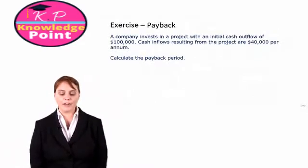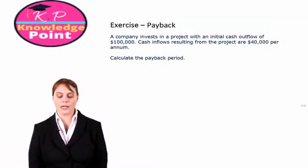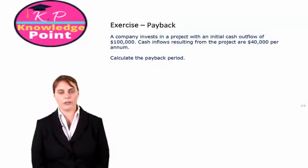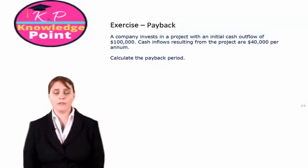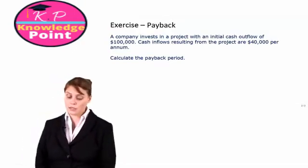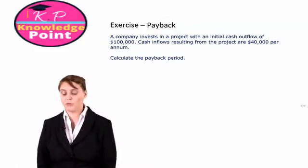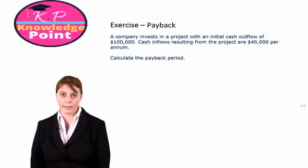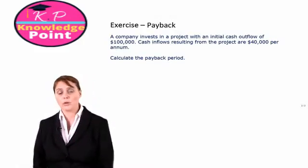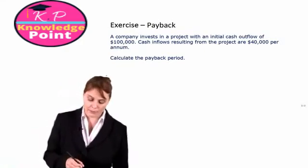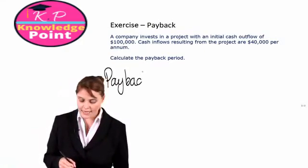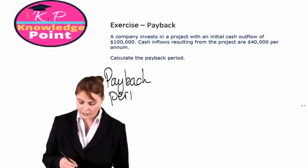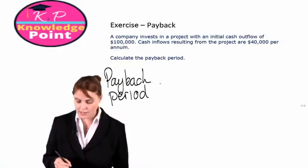We are told a company invests in a project with an initial cash outflow of $100,000. Inflows resulting from the project are $40,000 per annum. So, what is our payback period? How long will it take for us to get our money back that we invested initially?